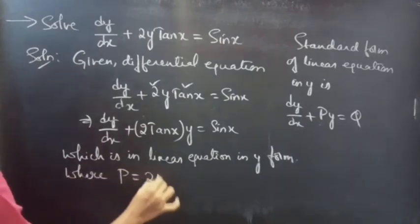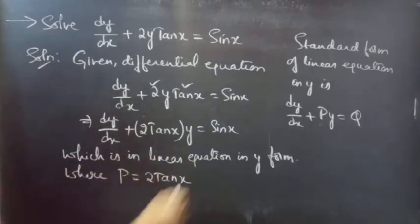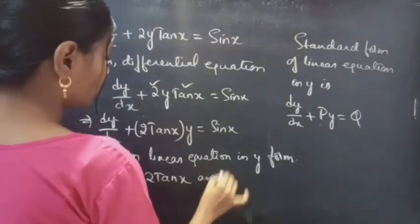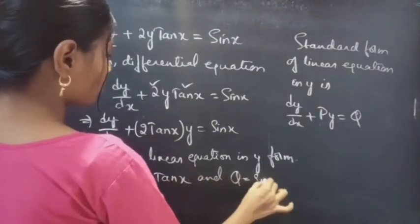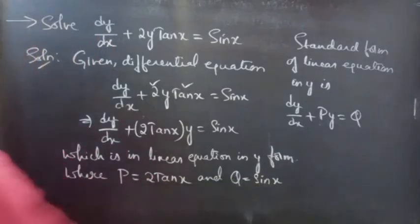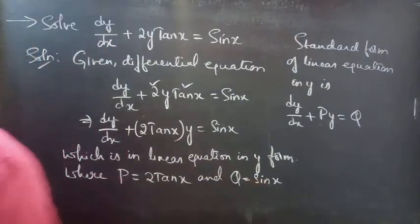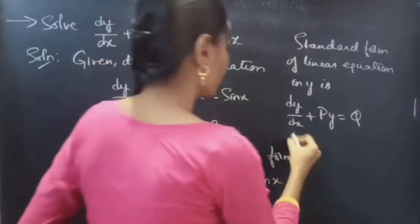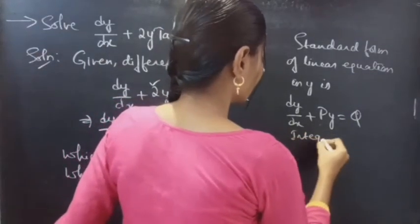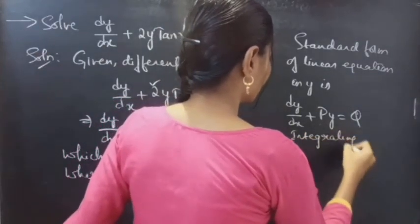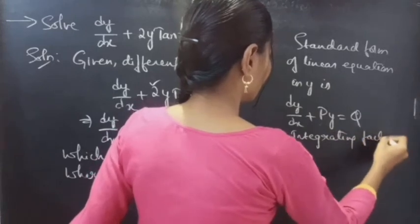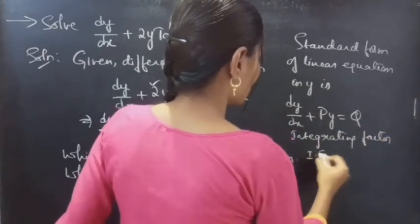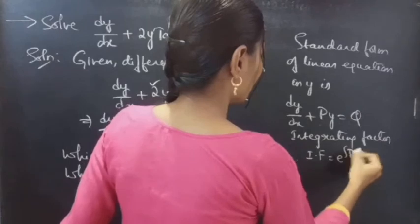P equals 2 tan x and Q equals sin x. Here P and Q are functions of x. Now we need to find the integrating factor. We know that the integrating factor IF is given by e to the power of integral of P dx.